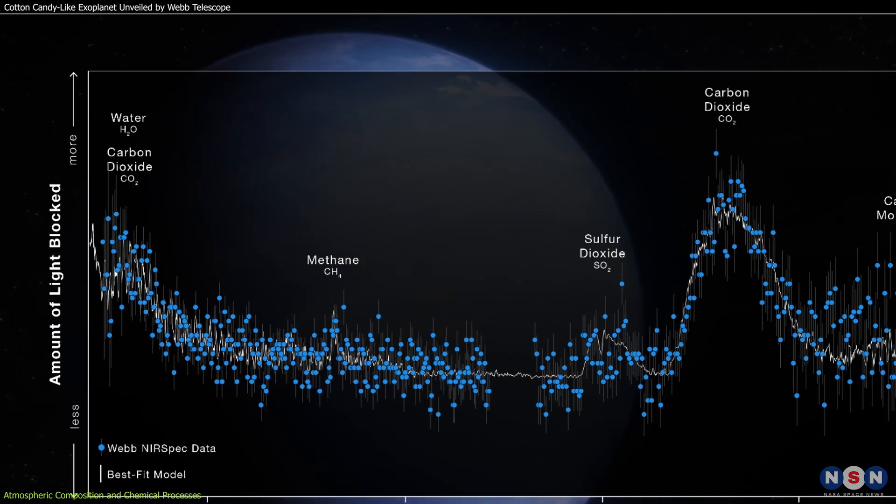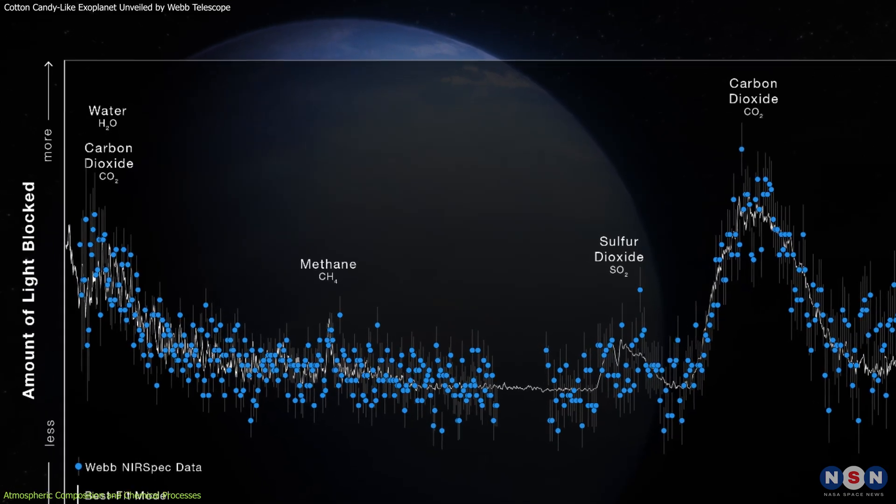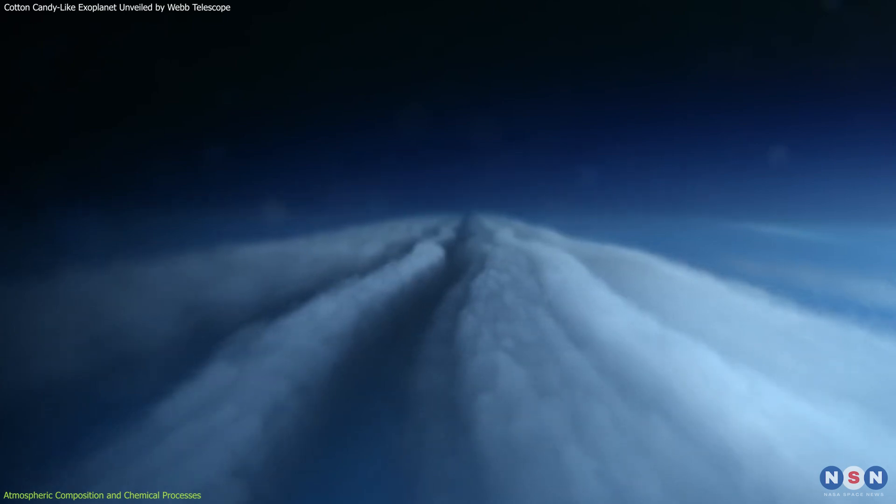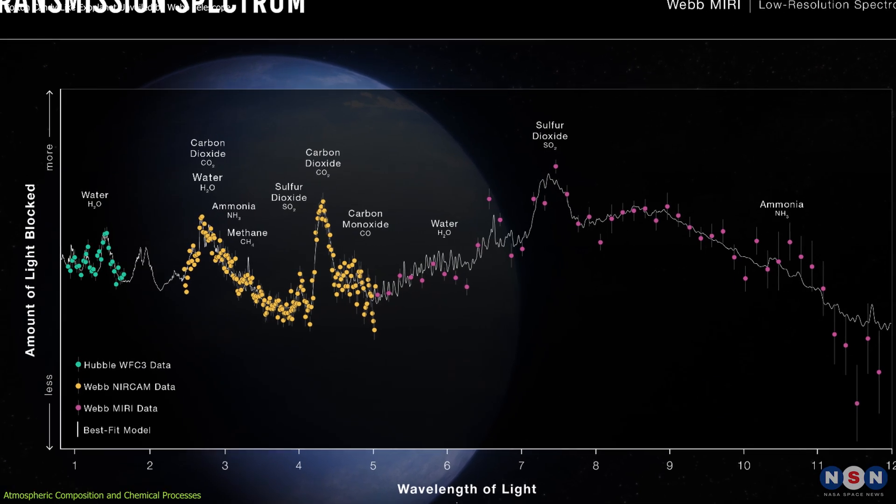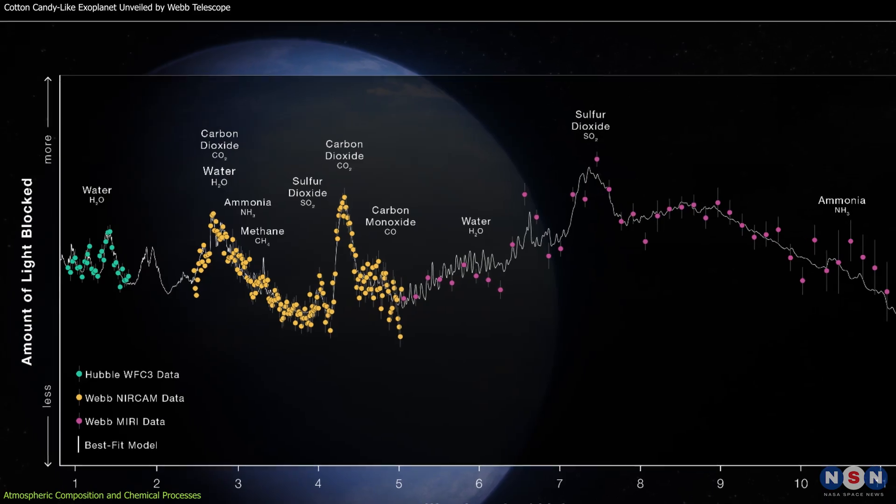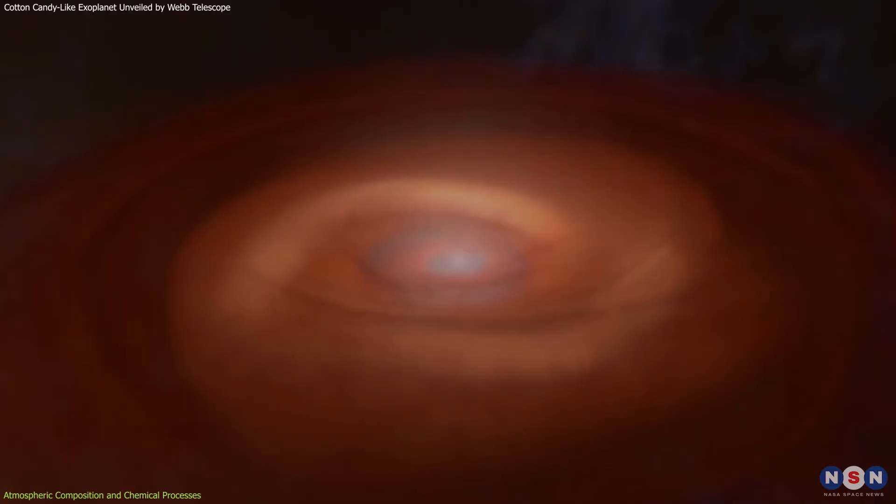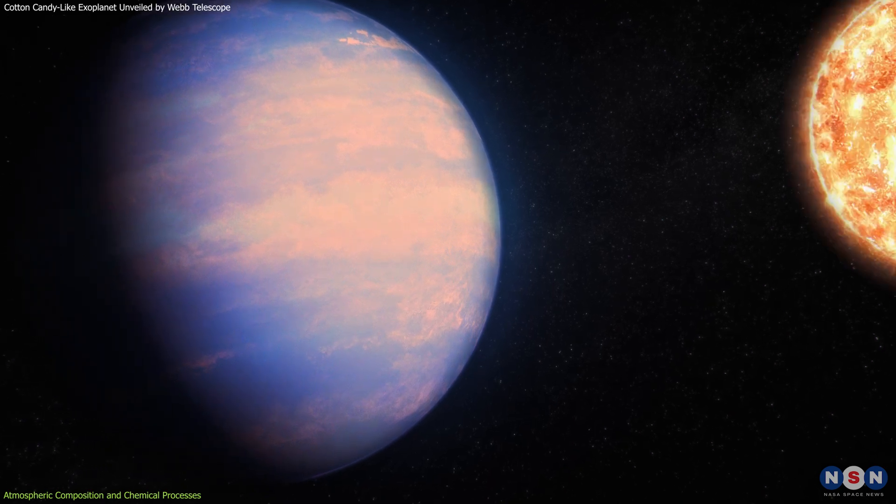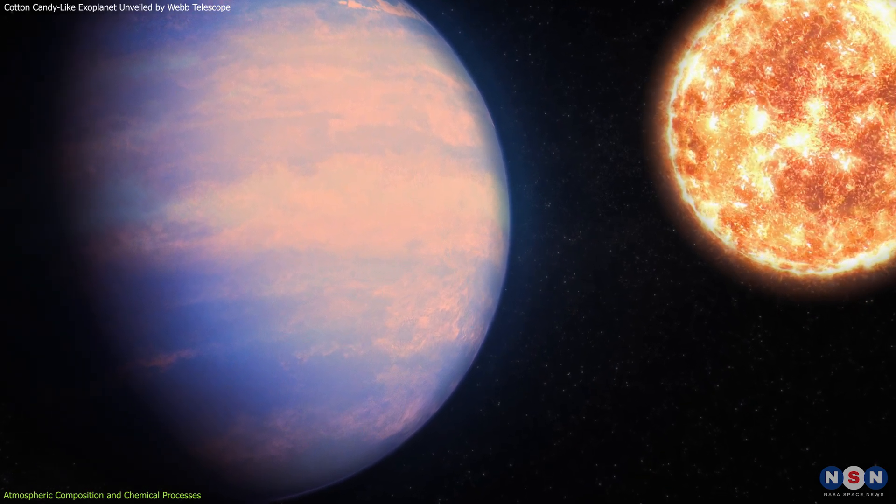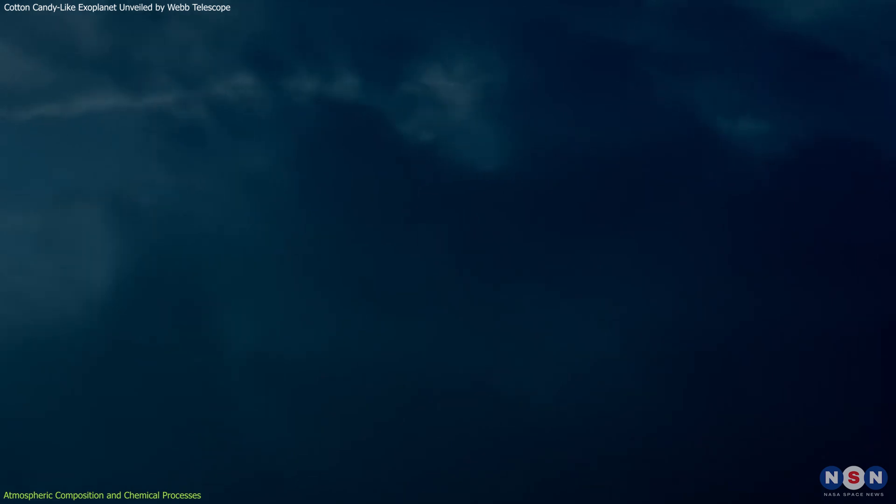Instead, the atmosphere contains higher concentrations of water vapor and sulfur dioxide, alongside clouds of silicate particles. These findings suggest a dynamic and chemically active atmosphere where traditional models do not wholly apply. The warmth of the planet, combined with radiation from its nearby star, likely drives complex chemical reactions that alter the atmospheric composition.